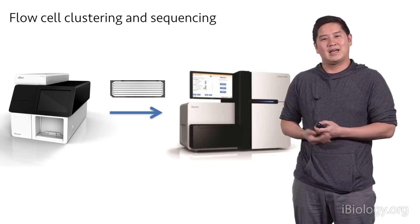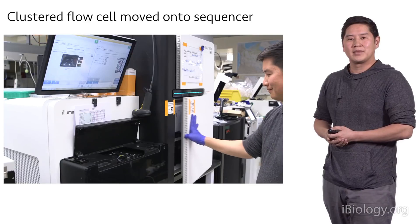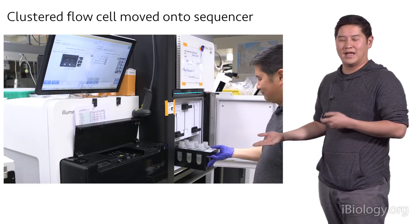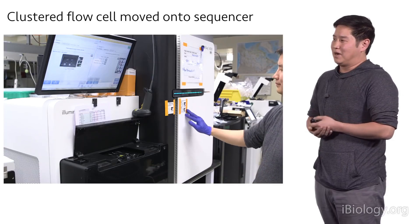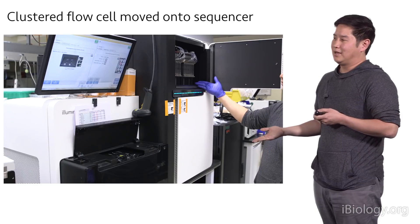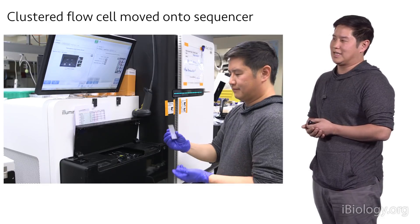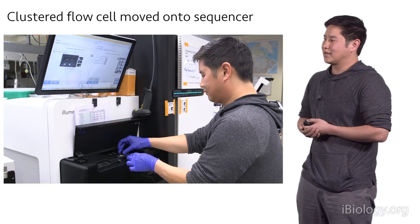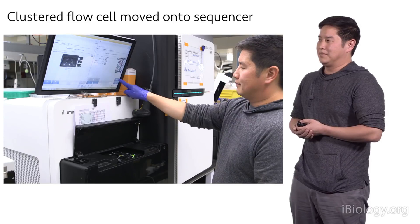And once that's done, we take that flow cell and move it on to the actual sequencer, in this case, a HiSeq instrument. And on the HiSeq instrument, we have a refrigerated compartment for all the sequencing reagents, a lot of enzymes in there that need to be kept cool during the three to four day sequencing run. Above the refrigerated section is a series of pumps that pull reagents from that refrigerated compartment and send them to the flow cell, which we will now load onto the stage. And so that is the flow cell from the C-BOT that just completed clustering. This gets mounted onto a stage and locked in place, and then we can begin the sequencing run.